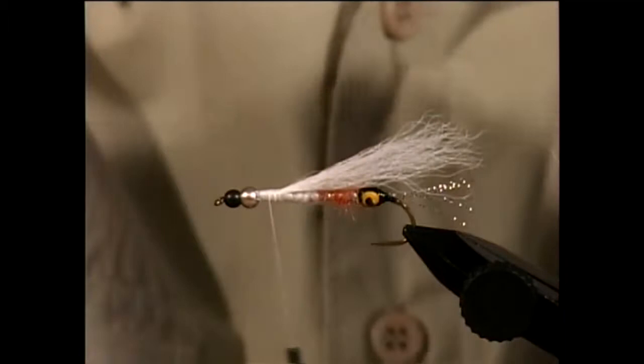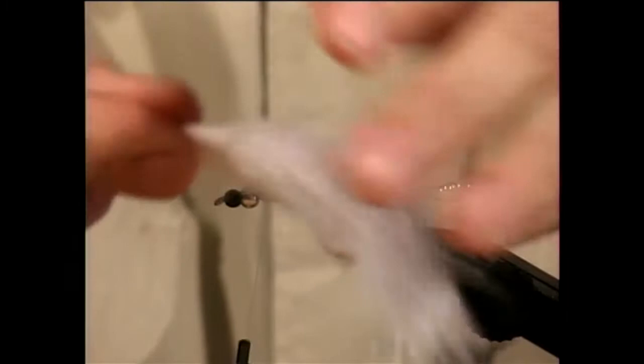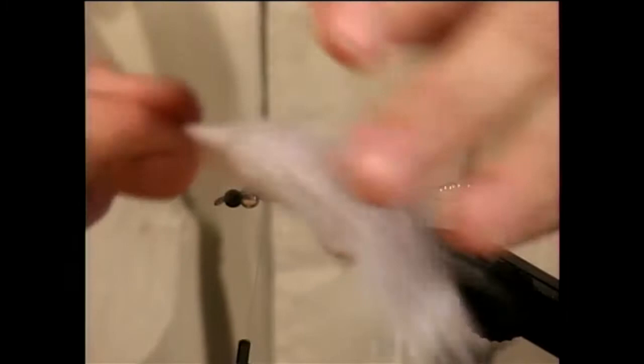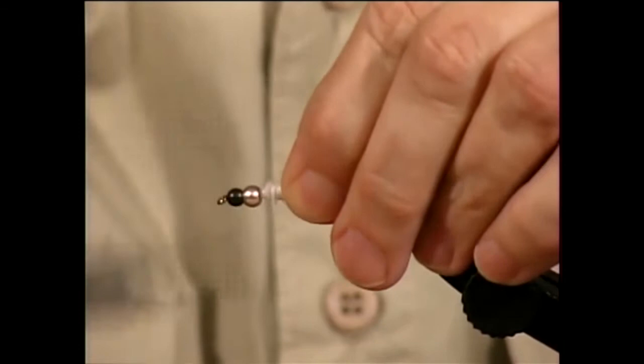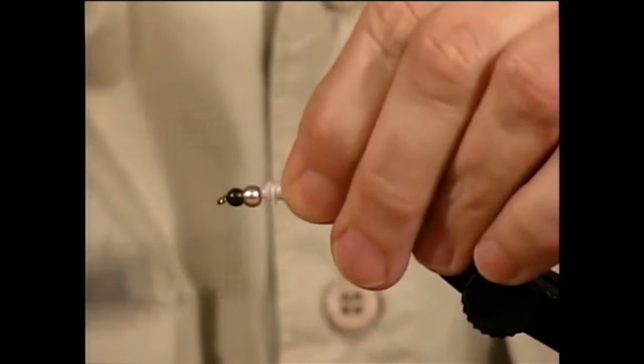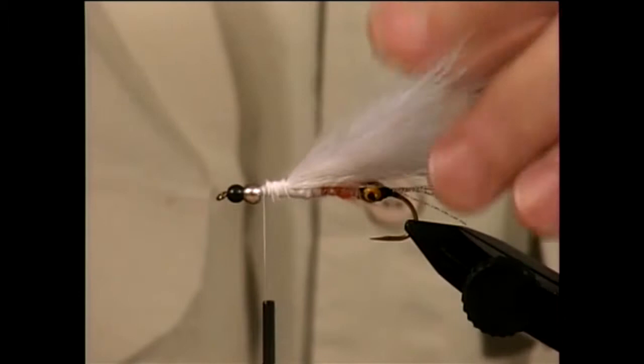And the next thing that goes on is an entire plume of white marabou. I'll take the plume of white marabou, and I'll measure it for length. I want it to be the exact same length as the calf, and then I'll trim it to tie it in. The tie-in point once again right in front of the beads.